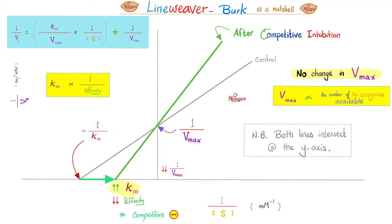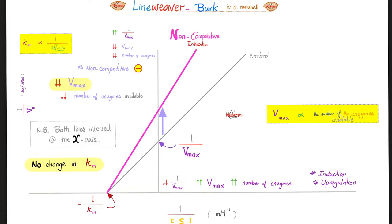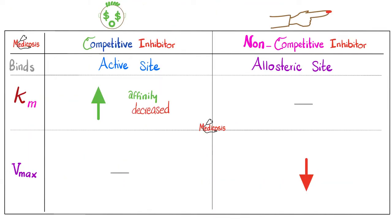Here is a summary of competitive and non-competitive inhibitors — pause and review. Competitive inhibitor is Cody the capitalist: binds the active site, affinity decreases, KM goes up, but total units sold did not change so VMAX stays the same. Nancy the Karen binds through the back door (allosteric site): when she yelled, your speed decreased (VMAX down), but you still love your car in the same manner (no change in KM).